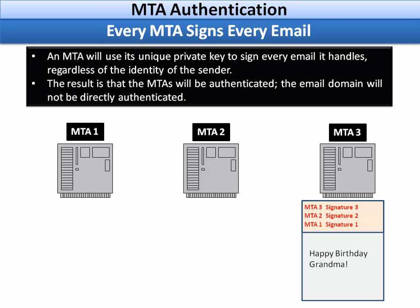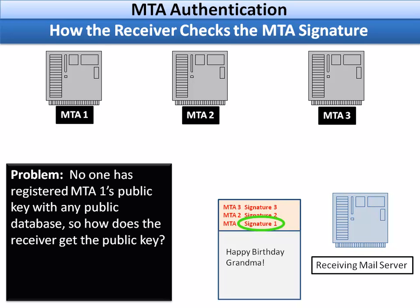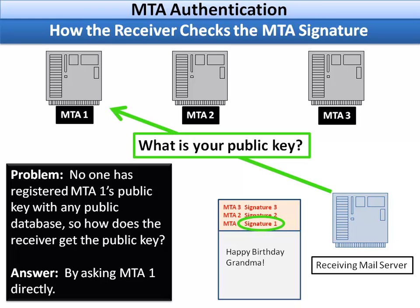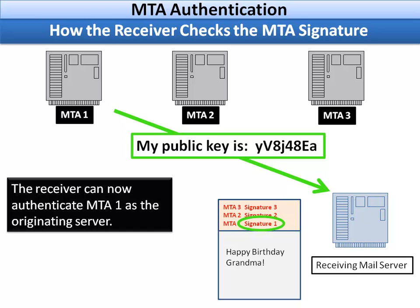The email domain itself is not directly authenticated. When this email message arrives at the receiving mail server, there's a problem: no one has registered MTA number one's public key with any public database. The answer is simply by asking MTA number one directly. The receiving mail server reaches across the internet and asks, 'What is your public key?' and MTA number one responds with its public key. The receiver can now authenticate MTA number one as the originating server without any domain administrator manually entering the public key into any public database.